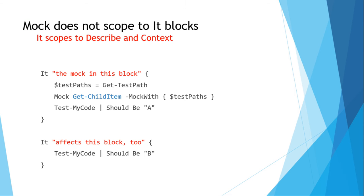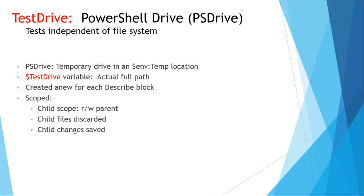Mock does not scope to It blocks. So a mock of Get-ChildItem in the first It block also affects output in the second one. The smallest mocking scope is Context — I learned that the hard way.